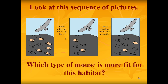Look at this sequence of pictures. We start out on the left with light-colored mice and dark-colored mice, and then we have a hawk that feeds on the mice. Some mice are eaten — the ones that kind of stick out, with light color on a dark background, able to be seen by the hawk. As time goes by, more babies are born, but which ones are going to have more offspring? The dark ones, because there are more dark ones left to actually reproduce. So which type of mouse is more fit for this habitat? If you said the darker mouse is more fit, you are correct.